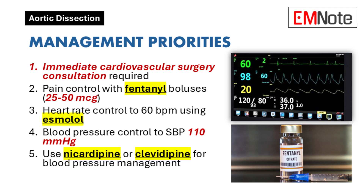The goal of medical management is anti-impulse therapy — reducing stress on the aorta by lowering heart rate and blood pressure. It's a multi-pronged approach, and we always start with pain control, because pain itself can elevate heart rate and blood pressure. Fentanyl is typically the best option, given in small repeated doses so it's easy to titrate.